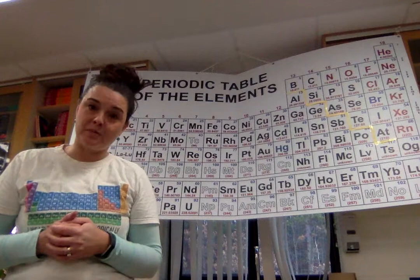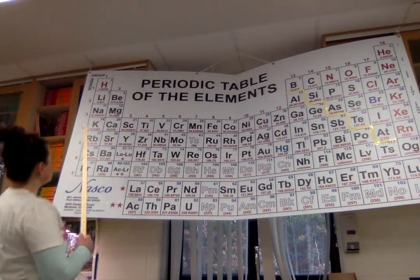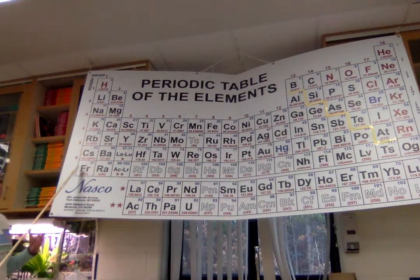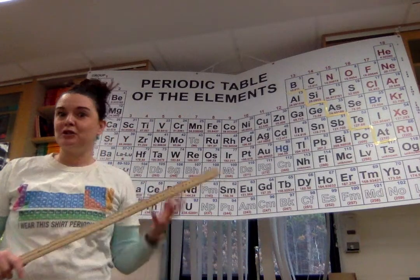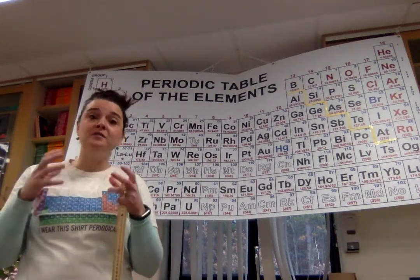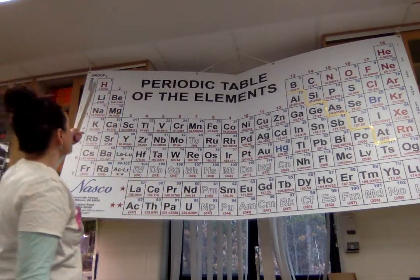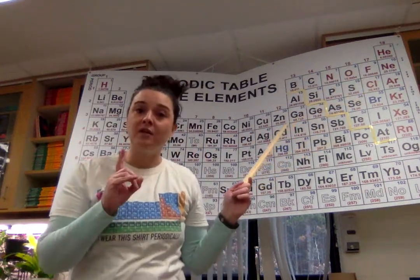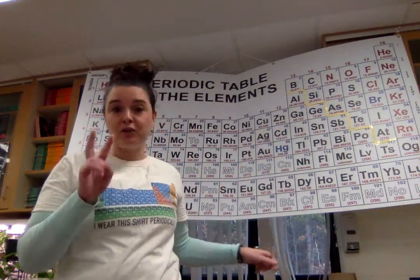On our periodic table there are actually 7 periods. The period number tells us how many rings or shells of electrons there are. So the first period is actually just made up of hydrogen and helium, and they only have one ring or shell of electrons. That first ring can only hold two electrons.